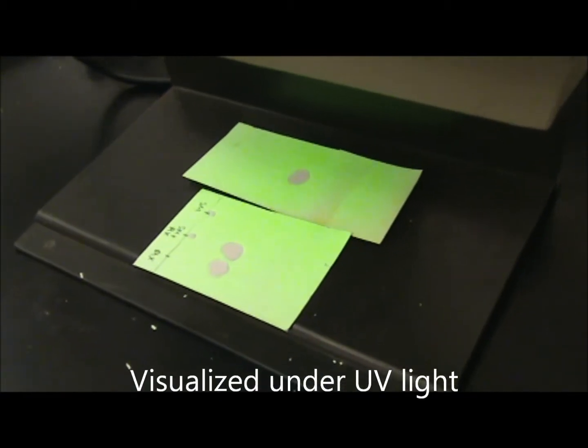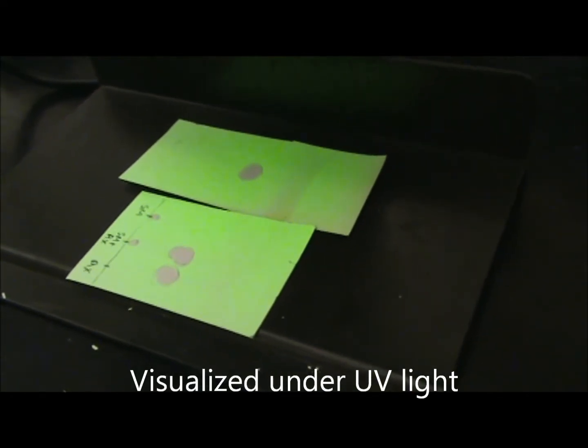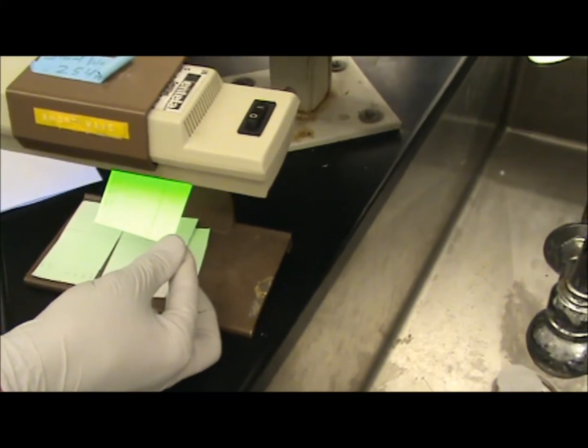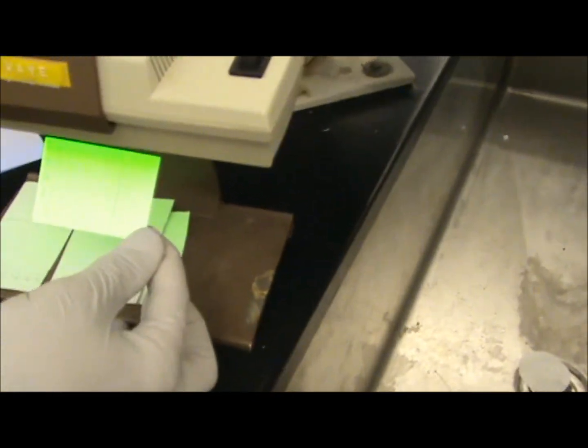I don't know. This is their awesome TLC plate. It doesn't show up very well on camera now. So what we have here is we have our Bach protected tryptophan methyl ester. What do you think happened to 26? There's two things in 26. Hence the two spots.